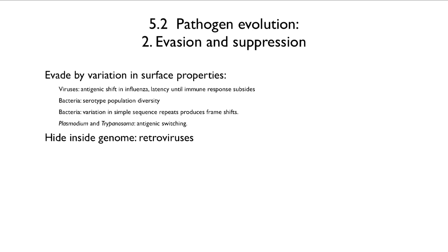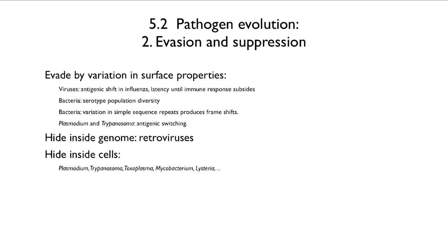Retroviruses hide inside the genome, and other organisms hide inside cells. Plasmodium, trypanosoma, toxoplasma, mycobacterium, and listeria are all intracellular parasites.